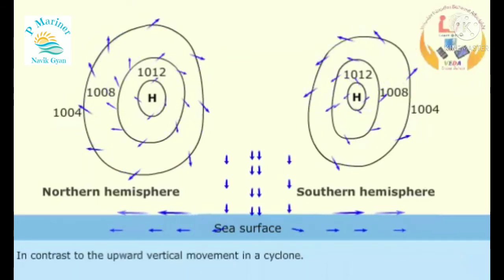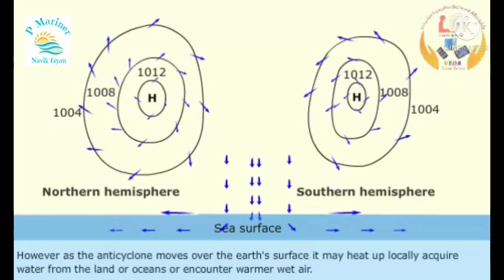In contrast to the upward vertical movement in a cyclone, however, as the anticyclone moves over the Earth's surface, it may heat up locally, acquire water from the land or oceans, or encounter warmer wet air.